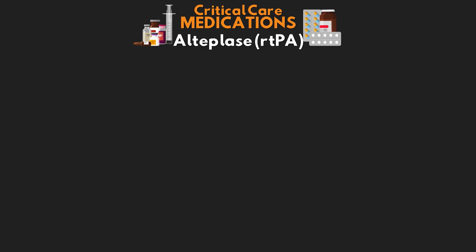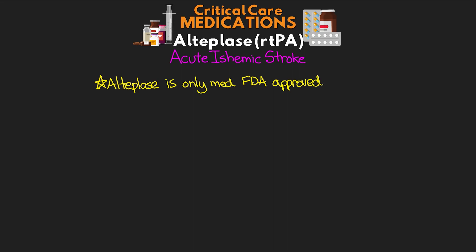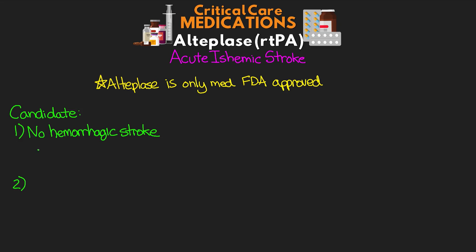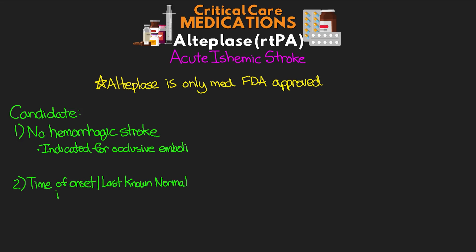There are four primary uses for this medication in critical care. The first is acute ischemic stroke. Alteplase — Activase — is the only medication approved by the FDA for use in acute ischemic stroke; reteplase and tenecteplase are not approved for this specific use. To be a candidate for rTPA, two conditions must exist: first, the patient does not have a hemorrhagic stroke as confirmed by head CT, since rTPA is indicated for occlusive embolic strokes and we obviously don't want to give a thrombolytic to someone with an intracranial hemorrhage.